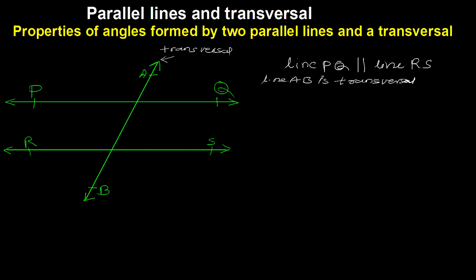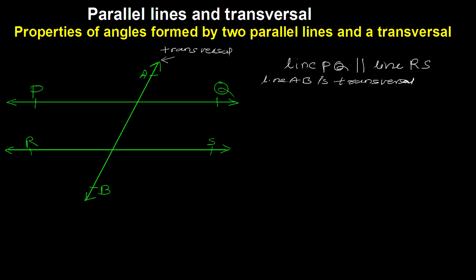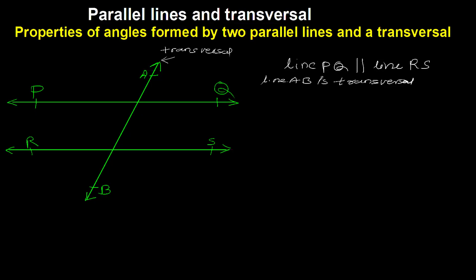Due to transversal AB, we get four angles at point M on line PQ. We give names angle A, angle B, angle C, and angle D as shown here. This one is point M.